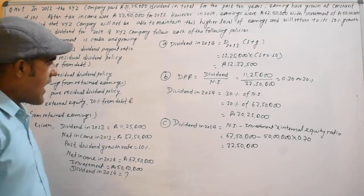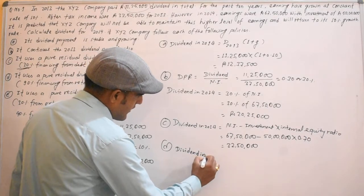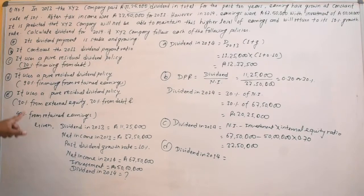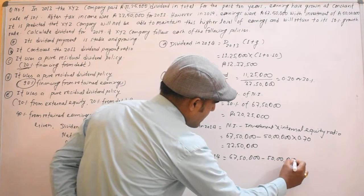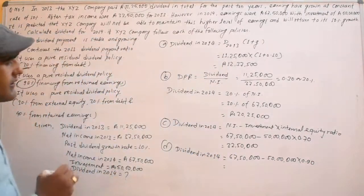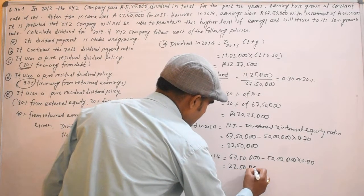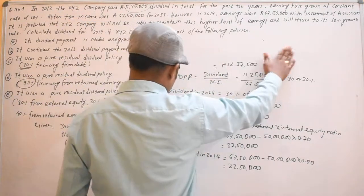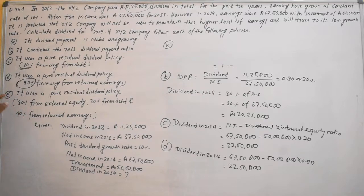In 2014, the residual dividend calculation: net income Rs. 67,50,000 minus investment Rs. 50,00,000 multiplied by the internal equity ratio of 0.70 gives the residual dividend. The return of the dividend is approximately Rs. 22,50,000, and the dividend of the dividend is about Rs. 15,00,000. Structure: 30% external equity, 30% debt, 40% return.